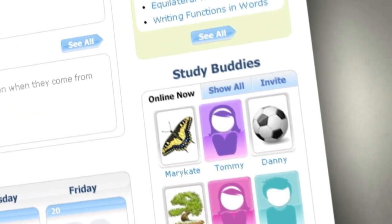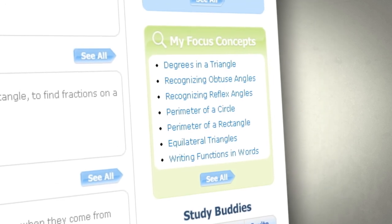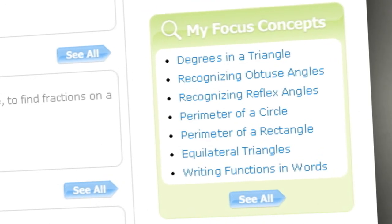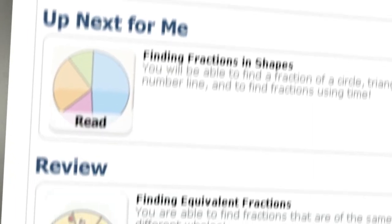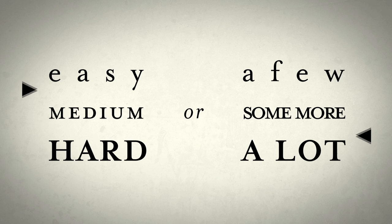Newton constantly assesses how they learn each concept best and, accordingly, determines whether to deliver a text explanation, video clip, game, or interactive exercise. Newton can provide a short, bite-sized piece of information, or a longer one, depending on how the student learns, and adjust the amount and difficulty level of practice questions.